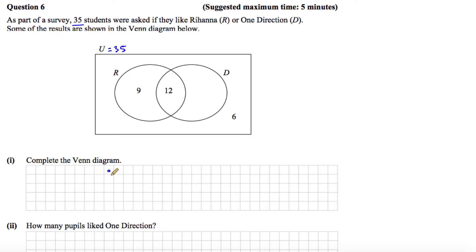So all we need to do is add 9, 12 and 6. That gives us 27. And we know that the missing number then will be 35 subtract 27 which gives us the number 8. So to complete the diagram we're going to put those 8 people in here. They're the people who like One Direction only.